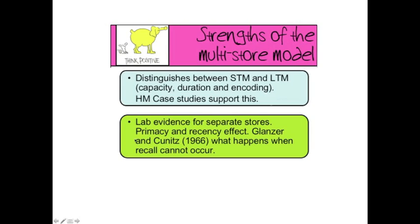There are also case studies supporting the model. H.M. was a man studied in depth by psychologists because he had some damage to his memory, and we can look at his case study in detail. There's also laboratory evidence, particularly what we call the primacy and recency effect — we tend to remember things at the beginning and end of a list of words, but the stuff in the middle tends to get lost. This suggests different stores doing slightly different things: the first item is probably now in long-term memory, while the last item is probably still in short-term memory.